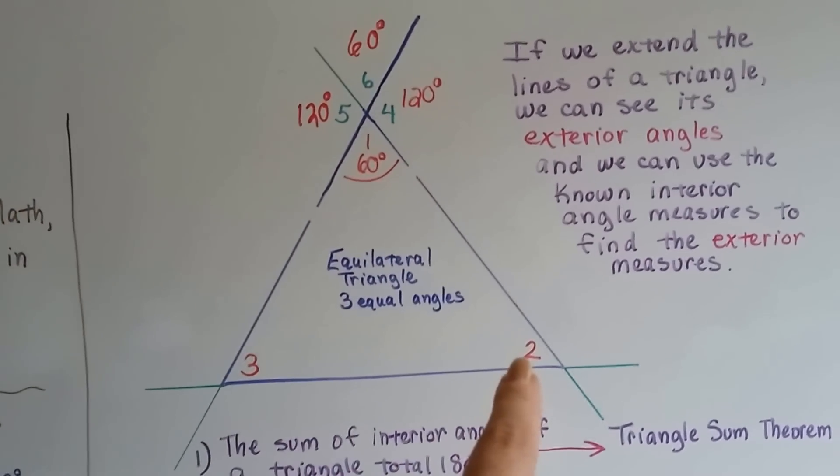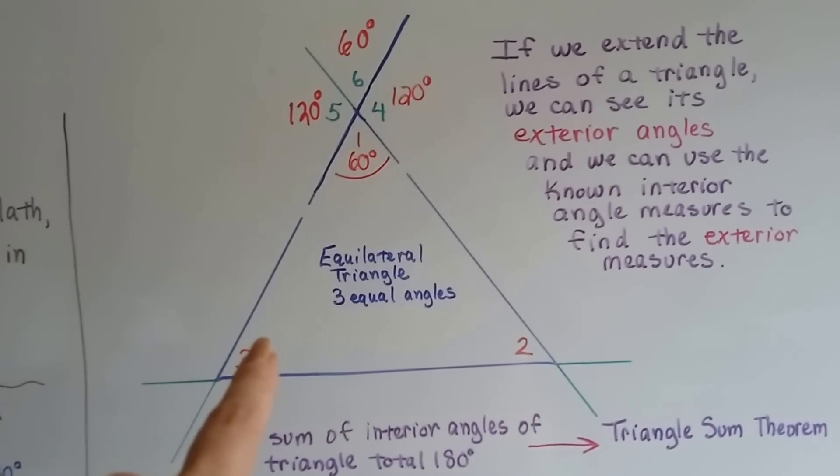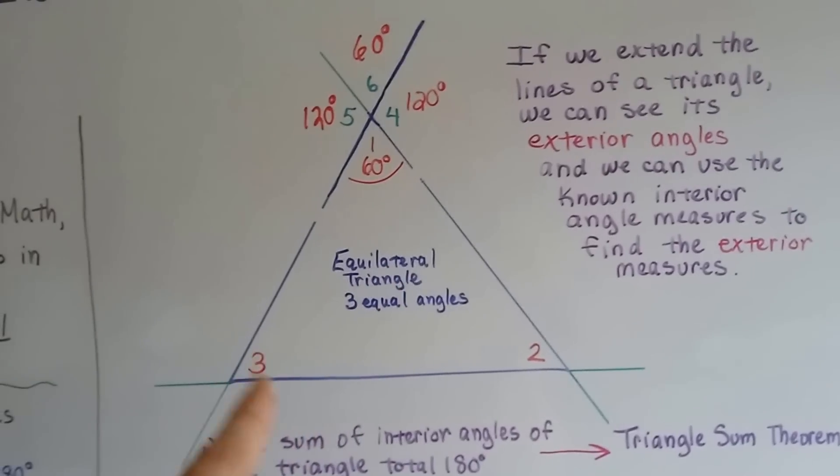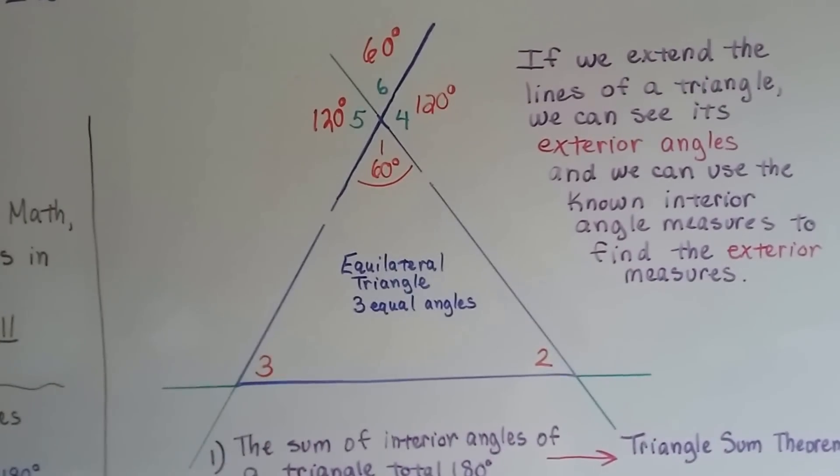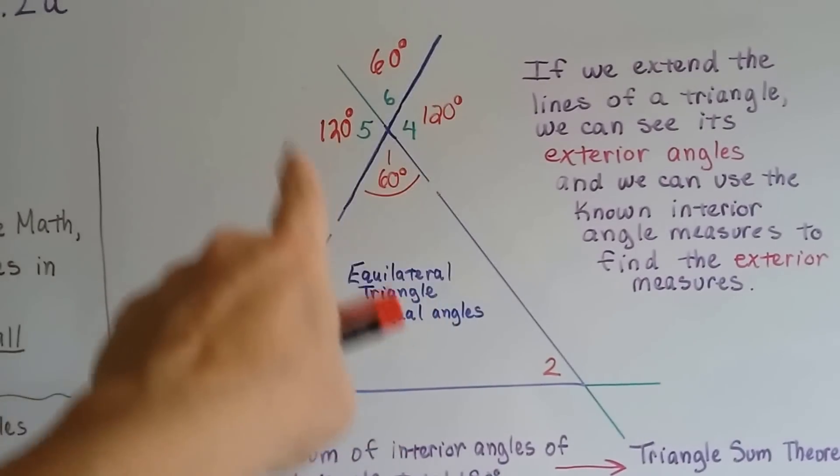Now, because angle 2 is also 60 degrees, we're going to get the same thing down here. And because angle 3 is 60 degrees, because it's equilateral, these are going to have the same measures. See that? So by having this one angle measure, we found all these other ones.